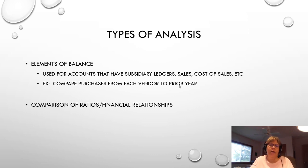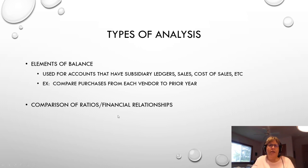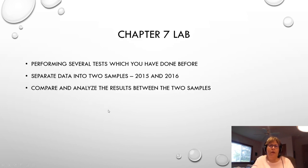Then there's comparison of ratios or financial relationships — this could include descriptive statistics as well as things like inventory turnover and current ratio. You're comparing year over year. Some changes can be easily explained by economic conditions or changes in the business, but those that cannot definitely need to be further examined.